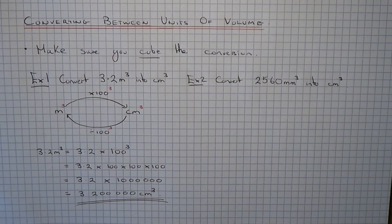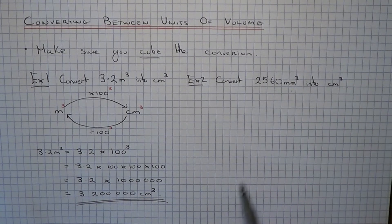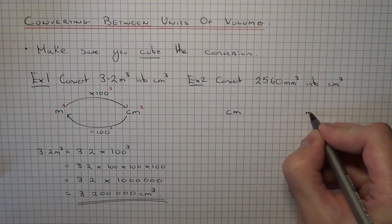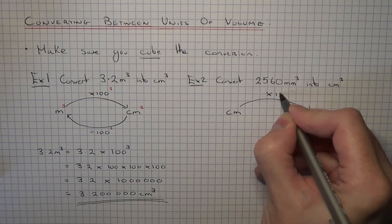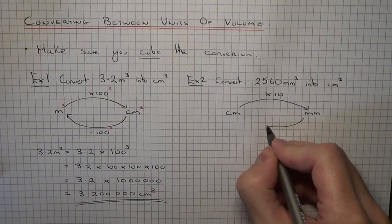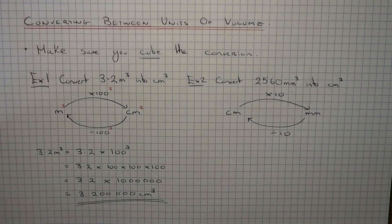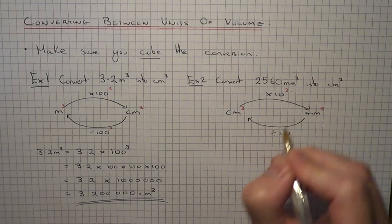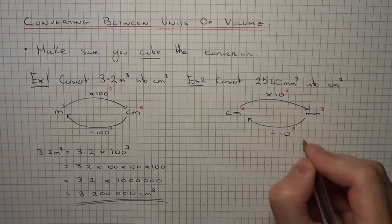Let's look at our second example. This time, we've got to convert 2,560 millimetres cubed into centimetres cubed. You should know that from centimetres to millimetres, normally, you would multiply it by 10 because there's 10 millimetres in a centimetre. And going back the other way, you would divide it by 10. However, again, it's going to be a cubic conversion, so we need to cube everything. From centimetres cubed to millimetres cubed, we would times it by 10 cubed, and millimetres cubed to centimetres cubed, we'd have to divide it by 10 cubed.